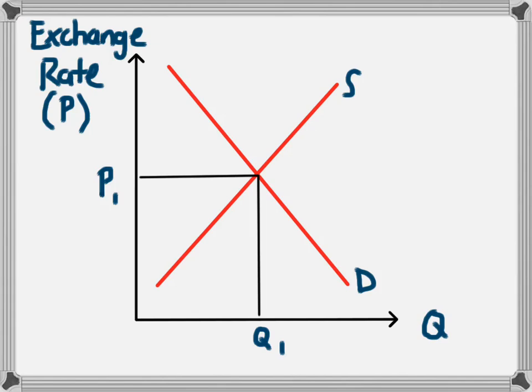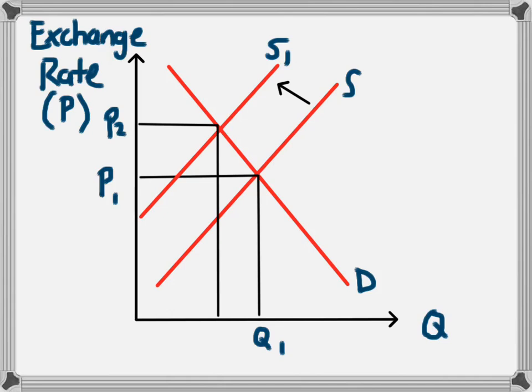Supply could also decrease. We could have a movement in the supply curve from S to S1, and then we'll have a new equilibrium exchange rate, which means there's an appreciation in the value of that currency from P1 to P2. There are therefore a lot of underlying factors which affect the currency value of a country — its exchange rate.